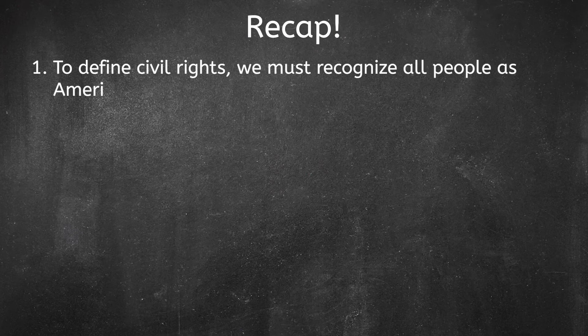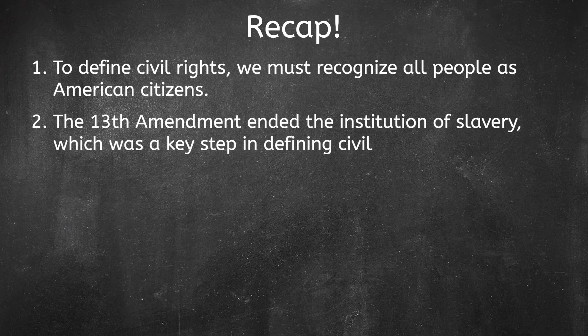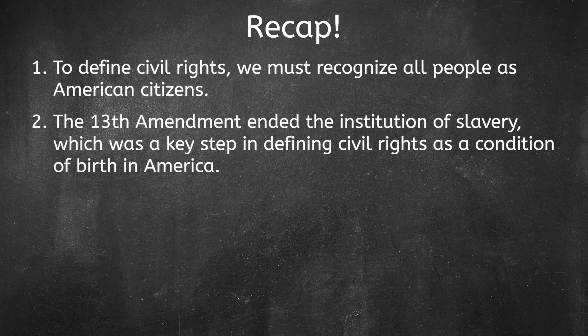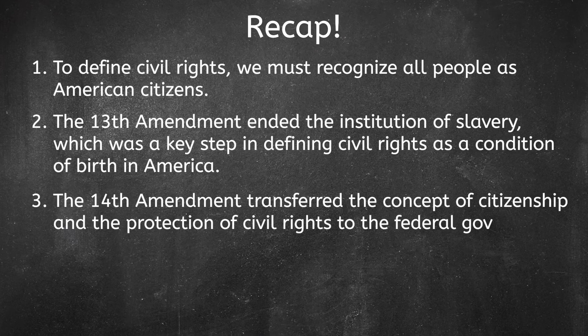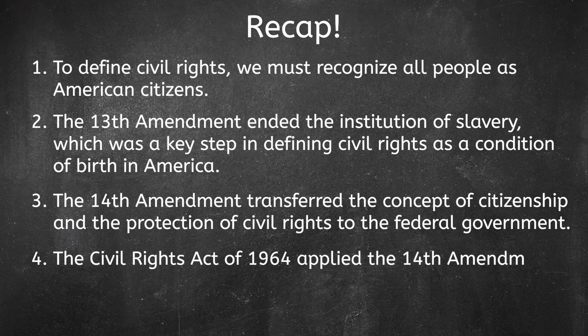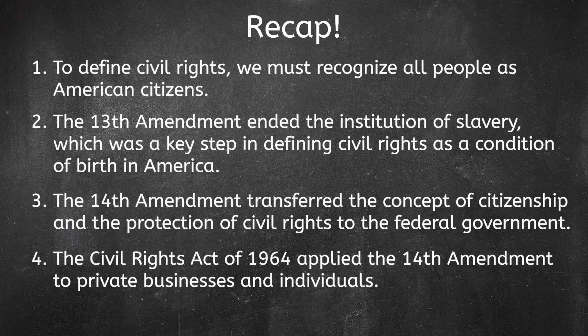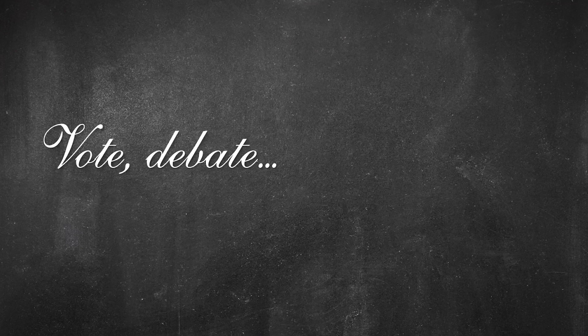Today, we learned that to define civil rights, we must recognize all people as American citizens. We also learned that the 13th Amendment ended the institution of slavery, which was a key step in defining civil rights as a condition of birth in America. We learned that the 14th Amendment transferred the concept of citizenship and the protection of civil rights to the federal government. And finally, we learned that the Civil Rights Act of 1964 applied the 14th Amendment to private businesses and individuals. That's it for us today. In the next lesson, we will investigate the expansion of voting rights in America. Until then, have a wonderful day and remember to vote, debate, and participate.